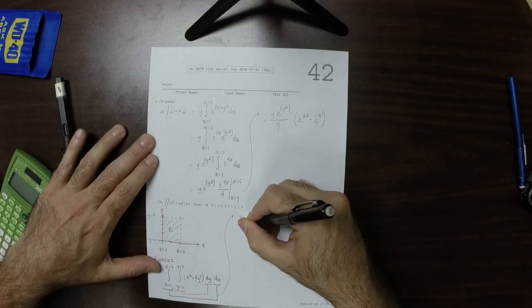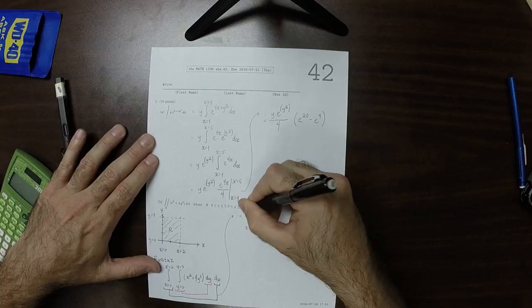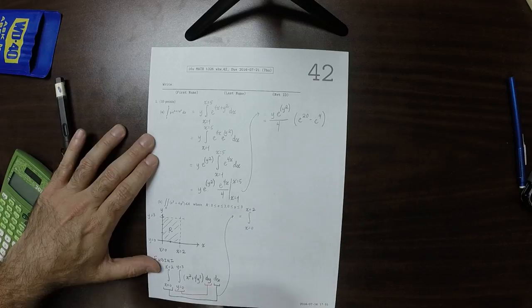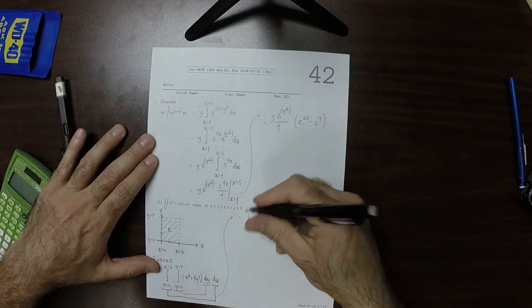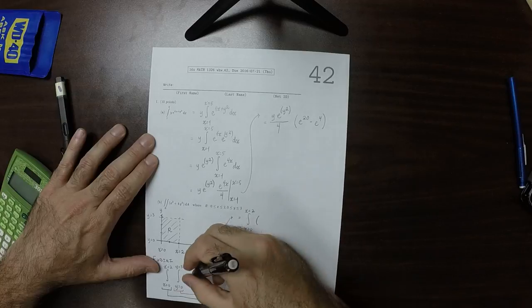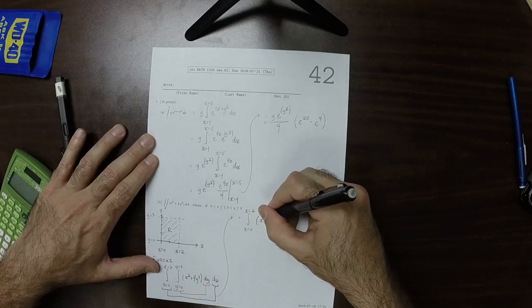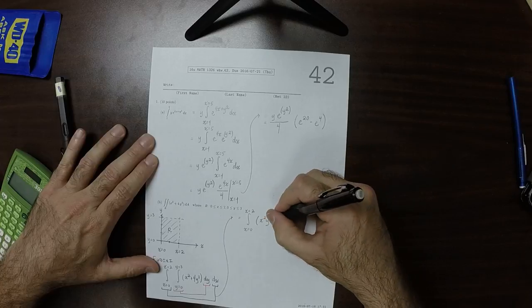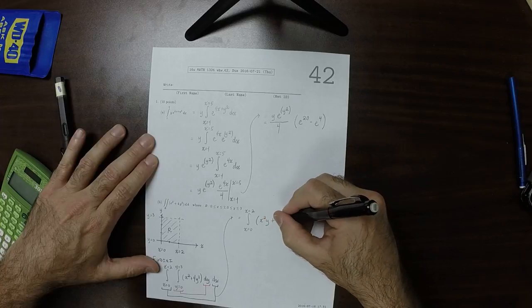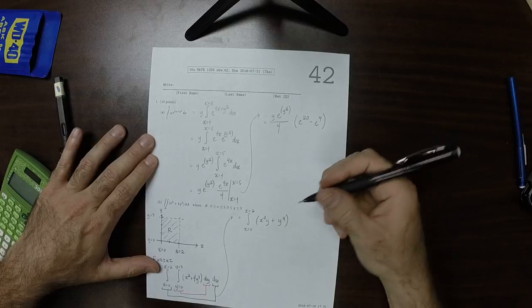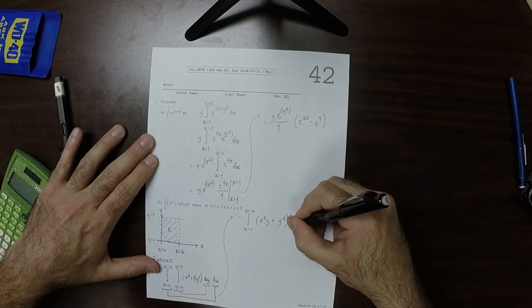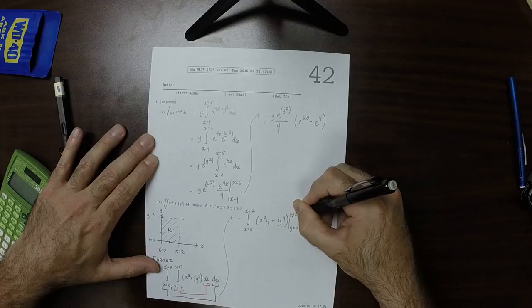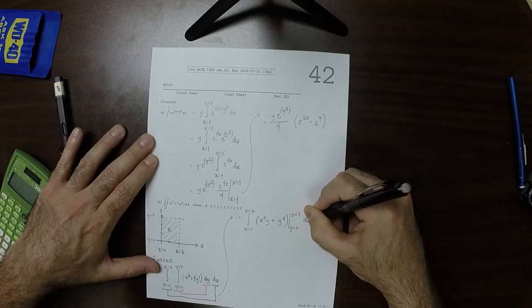So, that's integral from x is 0 to x is 2. And then, let's use the fundamental theorem here. That would be x squared y, plus y to 4. Evaluated from y is 0 to y is 3, dx.